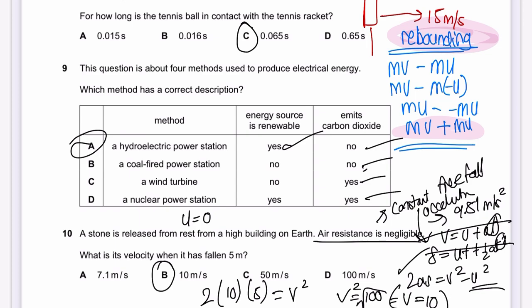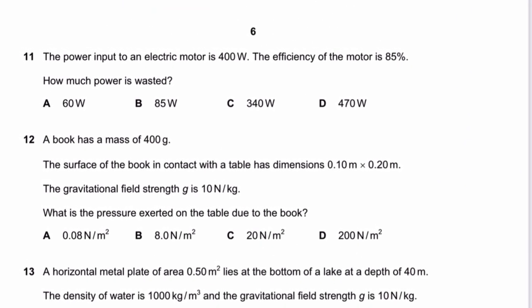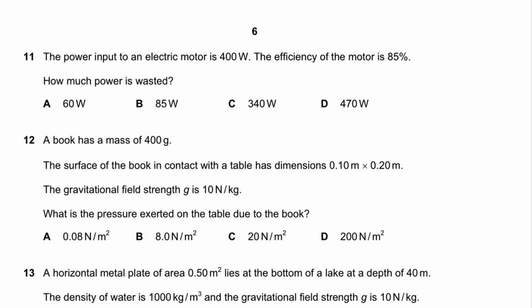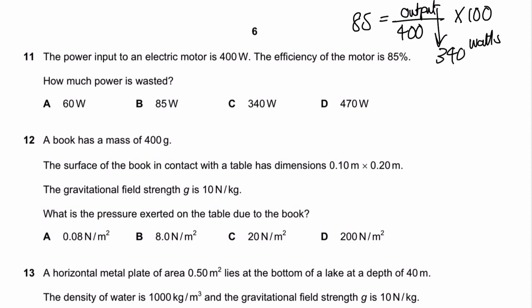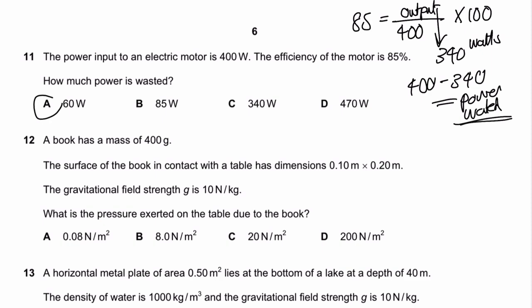Question 11: The power input to an electric motor is 400 W. Efficiency is 85%. How much power is wasted? Efficiency = output/input × 100, so output = 85/100 × 400 = 340 W. Power wasted = 400 − 340 = 60 W. The answer for question 11 is A.